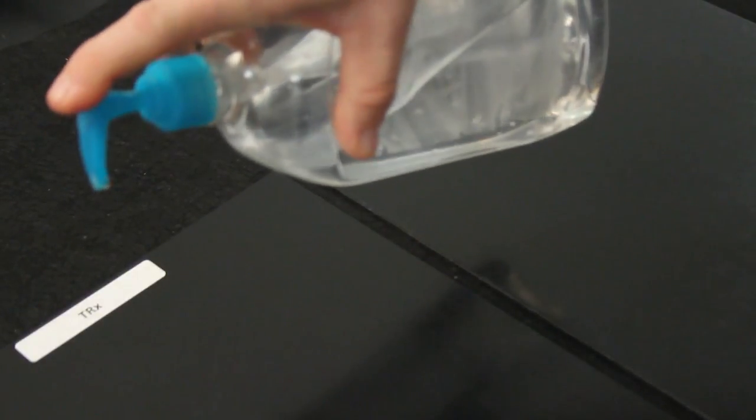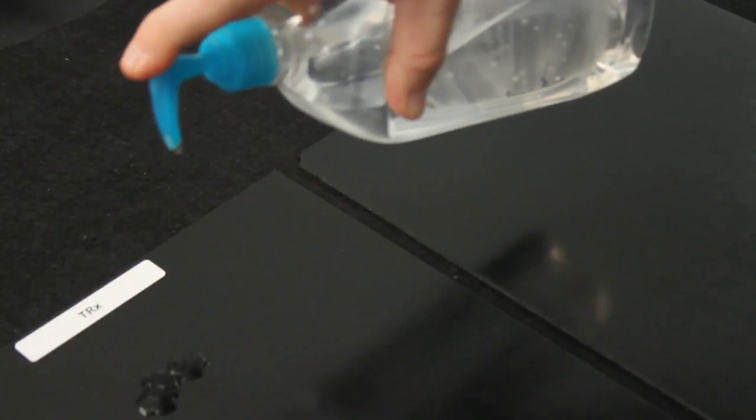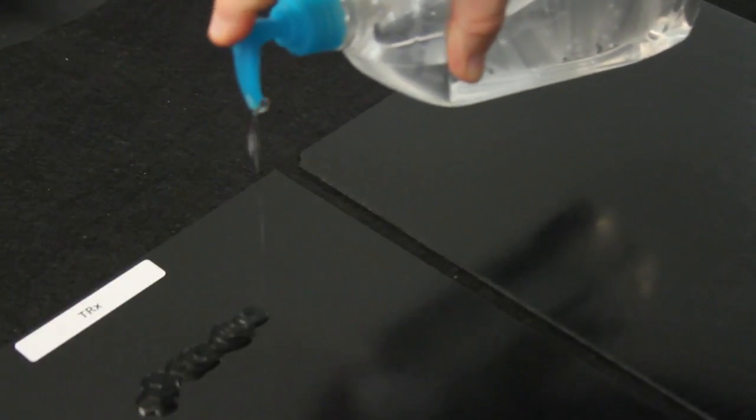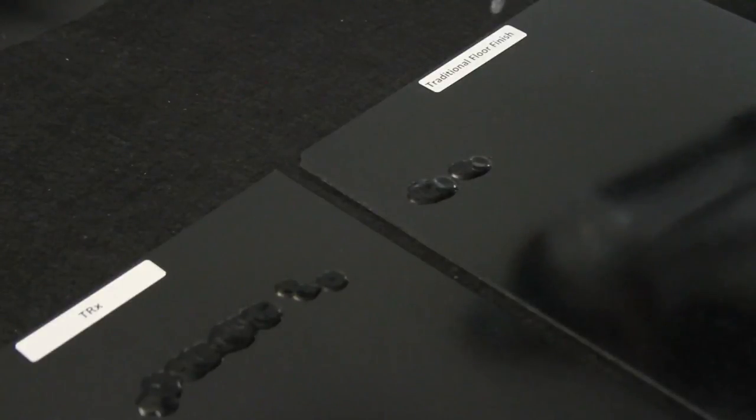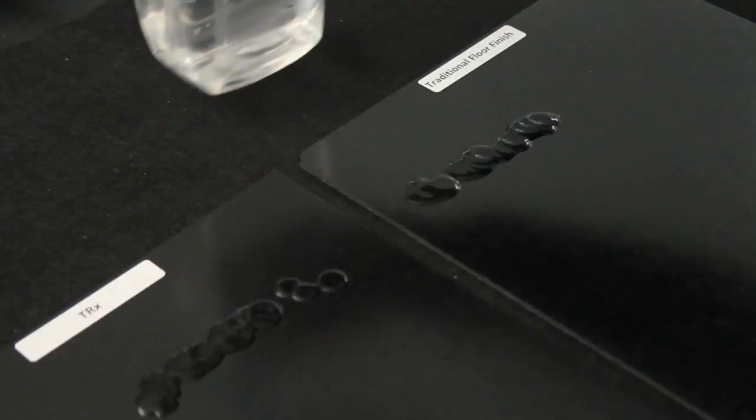I'm going to put alcohol sanitizer first on the TRX tile. Now I'm going to apply the alcohol sanitizer to the traditional coating. Now we'll let the alcohol sanitizer dwell.